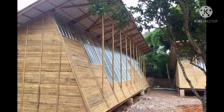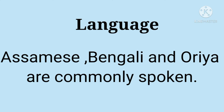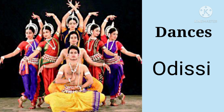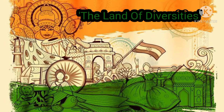Language: Assamese, Bengali, and Odia are commonly spoken languages in Eastern India. Dance: Odissi dance is very famous. We can conclude that India is the land of diversities — unity in diversity — meaning India is a land of vibhinnata yet remains united as one.